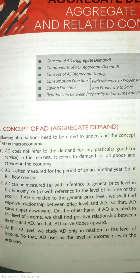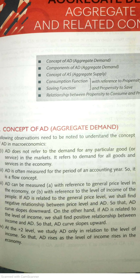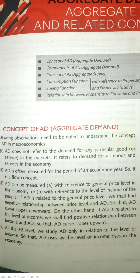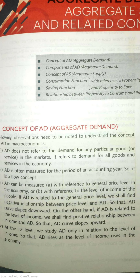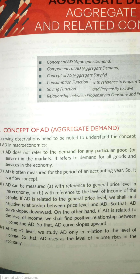जब economy में inflation चल रही है और prices overall बढ़ रहे हैं, तब aggregate demand कम हो जाती है। और अगर general price level कम हो रहा है, तब aggregate demand overall बढ़ जाती है। तो यहाँ पर price level और aggregate demand के बीच negative relationship है। और income की बात करें तो जैसे 11th में पढ़ा था, जब income बढ़ती है तो demand भी बढ़ती है।